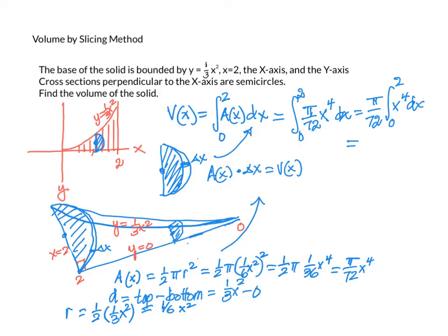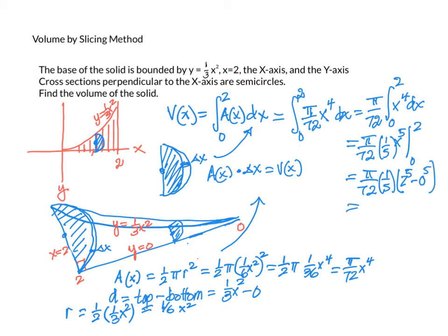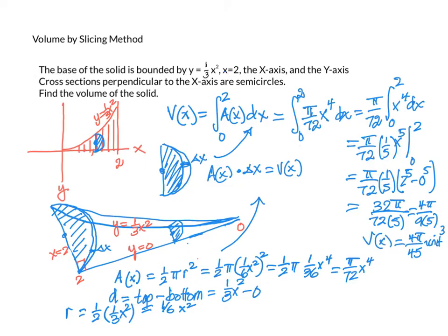Bringing π/72 outside the integral sign, we integrate from 0 to 2: π/72 times the integral of x to the 4th dx. Integrating gives π/72 times 1/5 x to the 5th, evaluated from 0 to 2. That's π/72 times 1/5 times (2 to the 5th minus 0). Simplifying: 32π over 72 times 5. Dividing numerator and denominator by 8, that's 4π over 9 times 5, giving a final answer of 4π/45 cubic units.